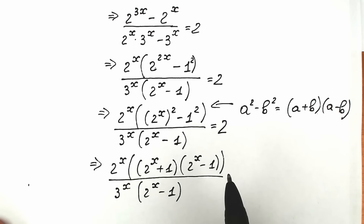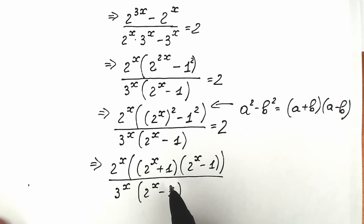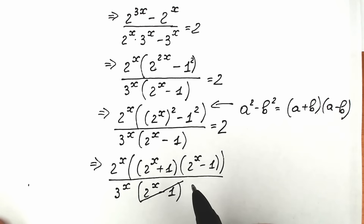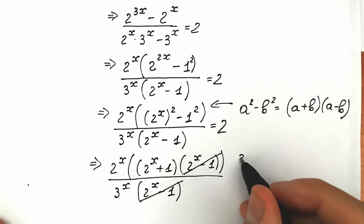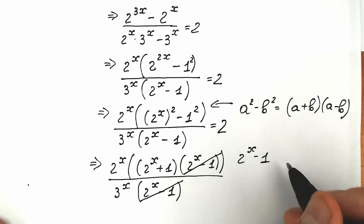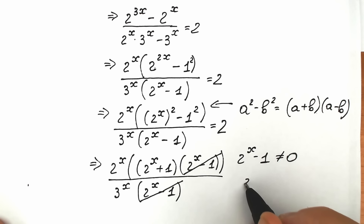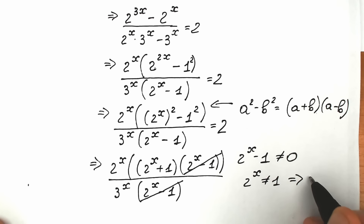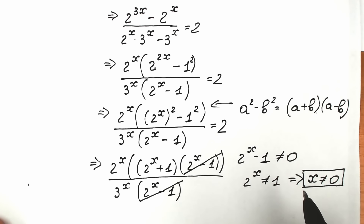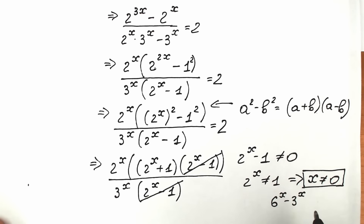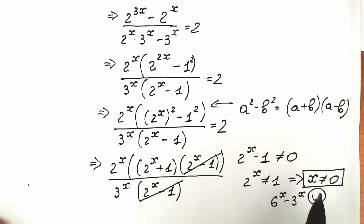Now, since we have multiplication throughout, we can cancel (2^x − 1) from numerator and denominator. But we must note that (2^x − 1) ≠ 0, which means 2^x ≠ 1, so x ≠ 0. This is also clear from the original denominator 6^x − 3^x: plugging in x = 0 gives 1 − 1 = 0, which is undefined. So x ≠ 0.